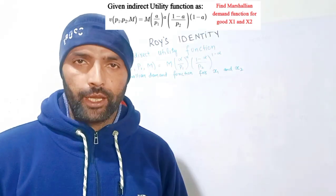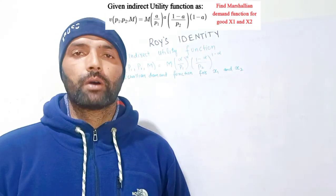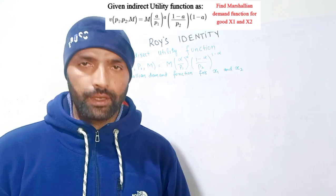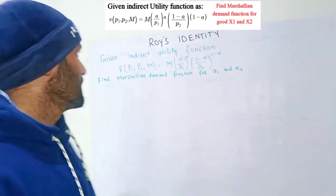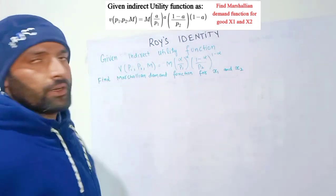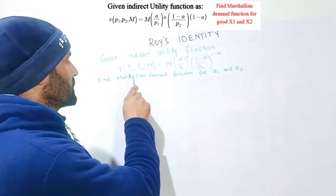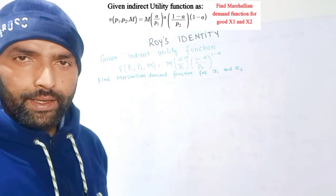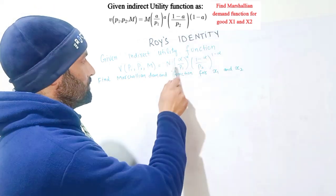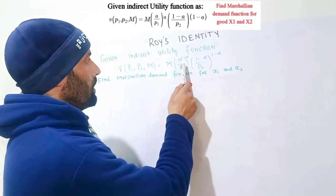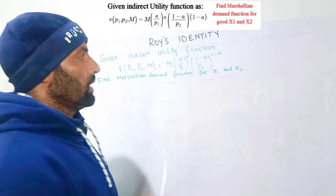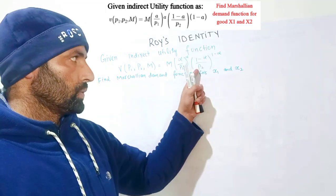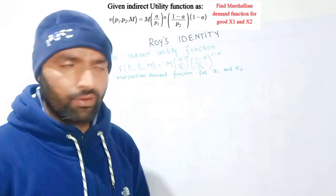In this video we will learn how to derive the Marshallian demand function from a given indirect utility function using Roy's identity. The given indirect utility function is V(p1, p2, m) = (alpha/p1)^alpha * ((1-alpha)/p2)^(1-alpha) * m.